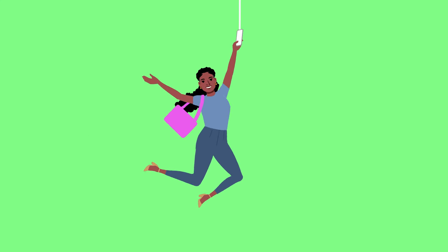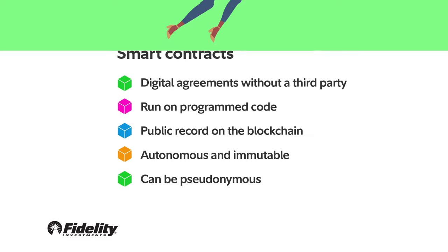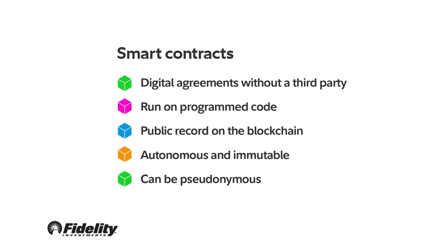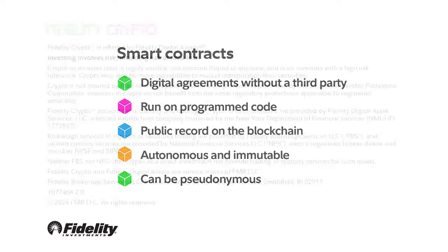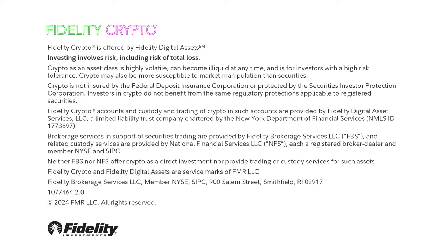Here's a quick recap: smart contracts are digital agreements without a third party. They run on programmed code and are public record on the blockchain. They execute automatically, cannot be changed, and can protect your identity.